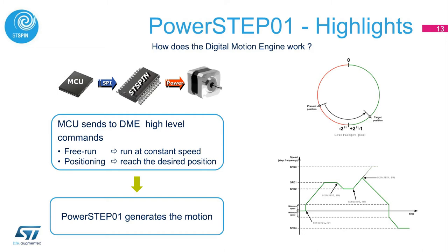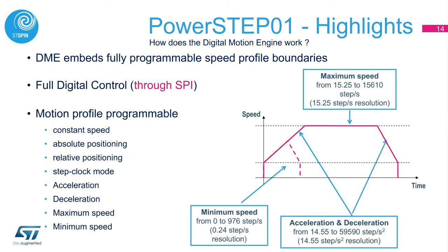How does the digital motion engine work? The microcontroller sends high-level commands through the SPI bus to the digital motion engine, and the PowerStep01 generates the motion. A free run command means to run at constant speed. A positioning command moves the motor to a desired position. PowerStep01 generates all of the motion and takes care of all control signals for the H-bridges. The digital motion engine embeds fully programmable speed profile boundaries, with commands like constant speed, absolute positioning, relative positioning, step clock mode, acceleration, deceleration, maximum speed, and minimum speed.